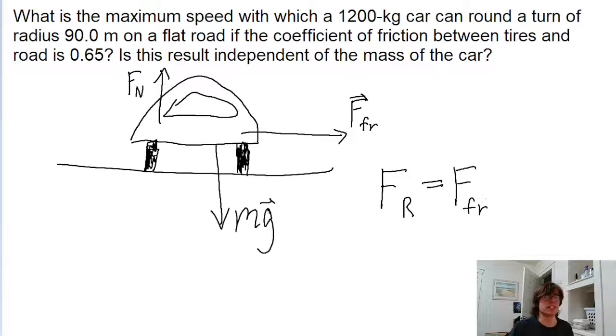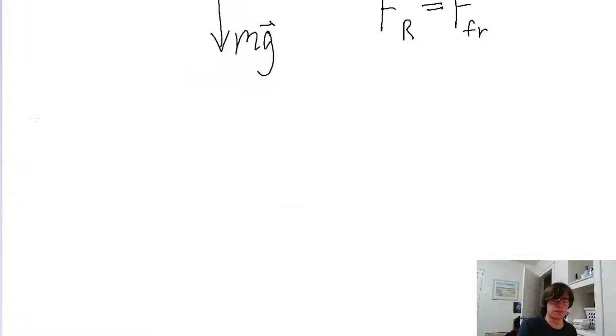One way to think of it is that the radial force is being caused by the frictional force. So let's expand this out. The radial force has a formula where it's equal to the mass times the square of the speed divided by the radius of curvature. And the frictional force is equal to the coefficient of friction, in this case the coefficient of static friction, times the normal force.